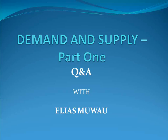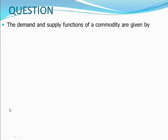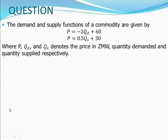Hello, welcome to the question and answer session where we're going to look at demand and supply part 1. In this video we're going to look at the market and determining the equilibrium. My name is Elias Muao. The demand and supply functions of a commodity are given by P = -2QD + 60 and P = 0.5QS + 30, where P, QD, and QS denote the price in Zambian Kwacha, the quantity demanded, and quantity supplied respectively.